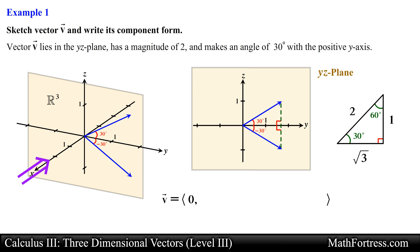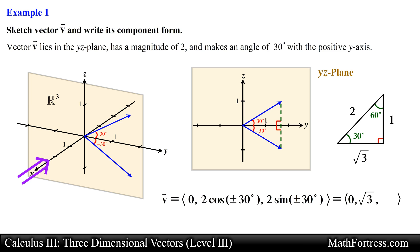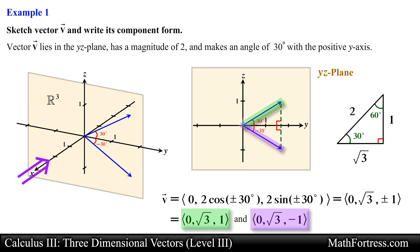Now that we have identified our vectors it is just a matter of using the 30-60-90 special right triangle to determine the values of the y and z components. For the y component, cosine of positive 30 degrees and cosine of negative 30 degrees yield the same value, which when multiplied by the magnitude gives the square root of 3. For the z component, sine of 30 degrees and sine of negative 30 degrees yield different answers differing only by a negative sign, giving positive and negative 1. So the components are 0, square root of 3, and plus or minus 1.